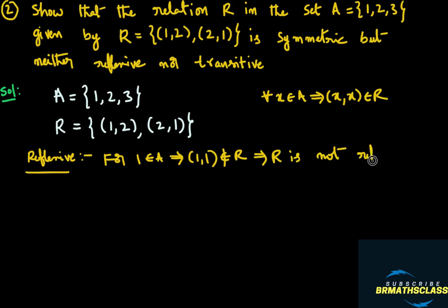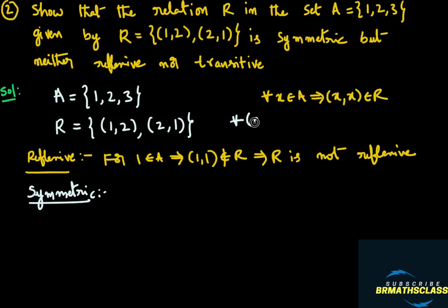The given relation is not reflexive. Now, how to check the symmetric property? You must know the definition of symmetric relation to check whether the given relation is symmetric or not. What is symmetric relation? For every ordered pair (a, b) that belongs to R, the ordered pair (b, a) is also there in the relation. Then we say that relation is a symmetric relation.